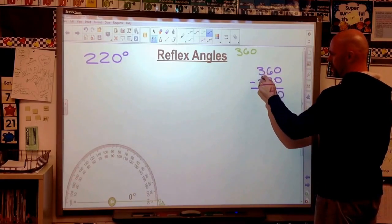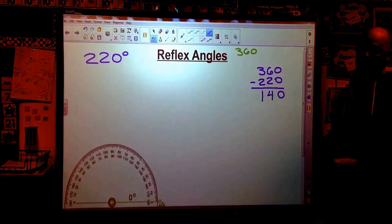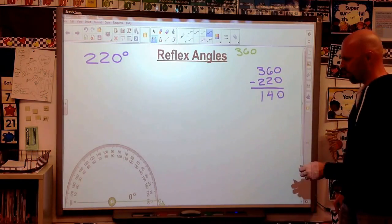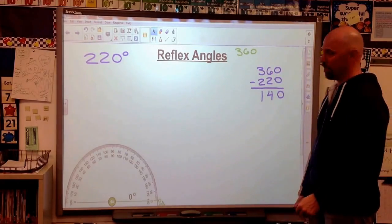360 minus 220. Let's figure out what that opposite side is, that acute angle would be. 0, 4, 3 minus 2 is 1. This is going to be 140. That's actually not going to be an acute angle. That's going to be an obtuse angle, but that's okay. You'll see it when we draw this.